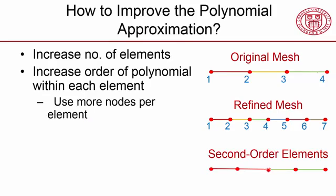Here, I've shown a mesh with two second-order elements. So this would be the first element, and that would be the second element. And each element has three nodes—one, two, three—as opposed to here, where each element has only two nodes.